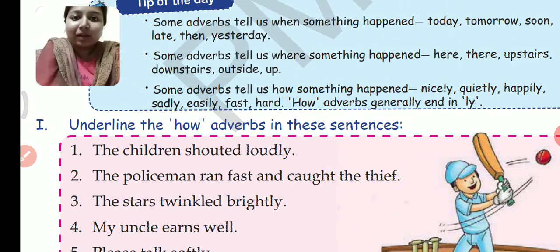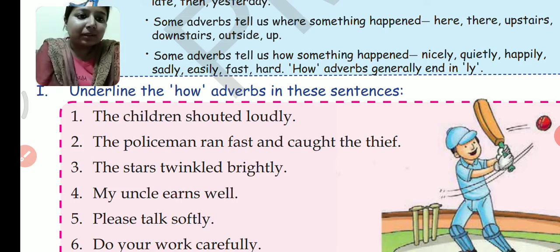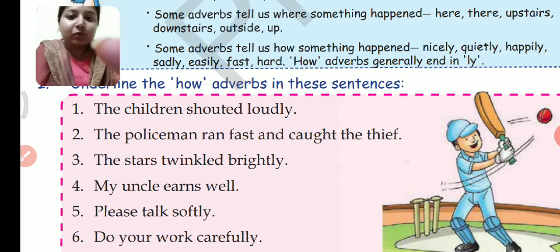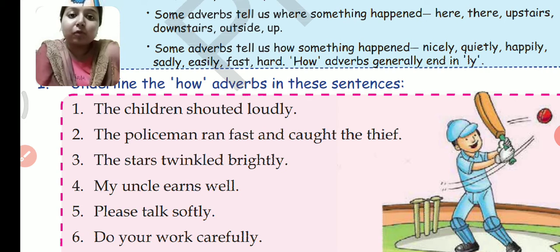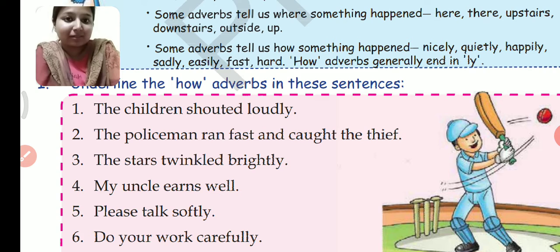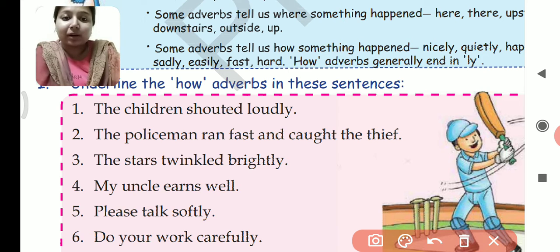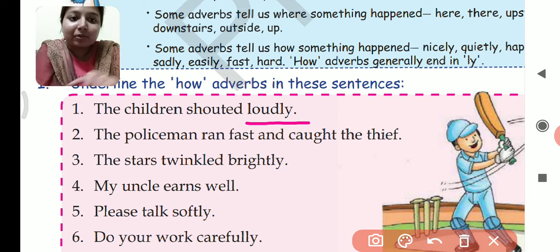Now based on the explanation, we have some questions. Question 1: Underline the how adverbs in these sentences. We have eight sentences and you have to underline the how adverbs. First: 'The children shouted loudly' — shouted is the verb, so how did the children shout? They shouted loudly. Second: 'The policeman ran fast and caught the thief' — ran is the verb, so how did the policeman run? He ran fast.